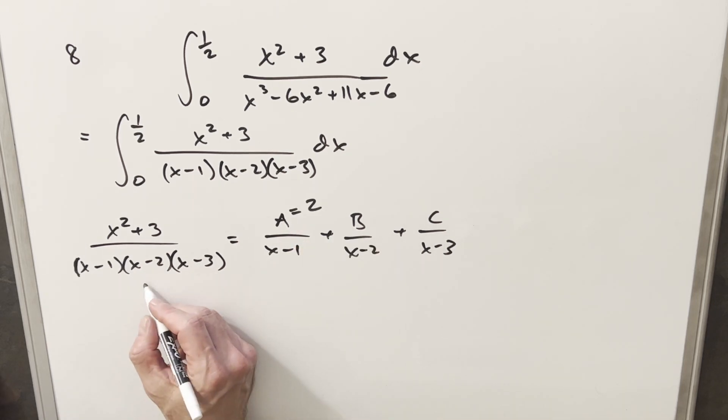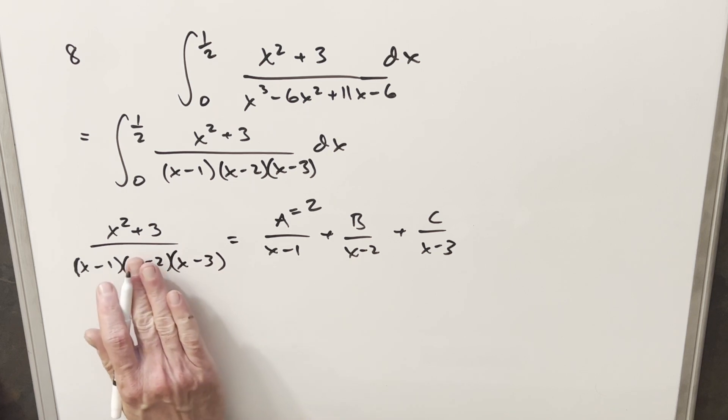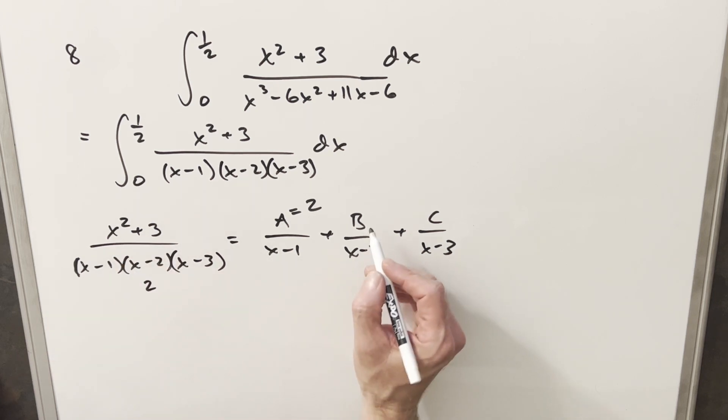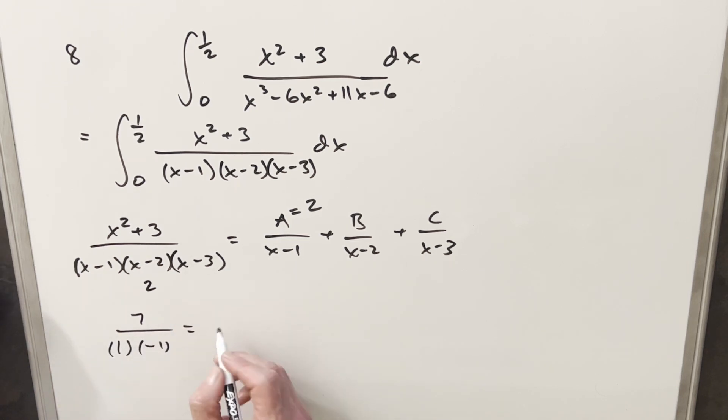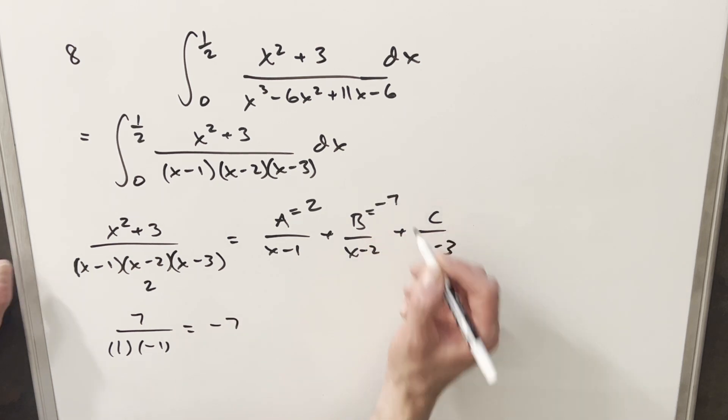Okay, doing the same thing with our second term here. If I plug a 2 in here and cover that up, plug a 2 in everywhere else, this is going to be for our B value. So in the numerator, we're going to have 2² + 3, which is 4 + 3, or 7. Plugging a 2 in here is just a 1. Then plugging a 2 in here is a -1. Dividing that up just gives me -7, and that's going to be my B value.